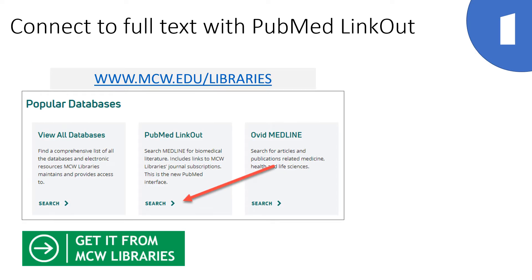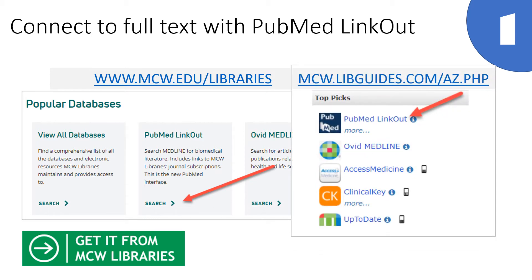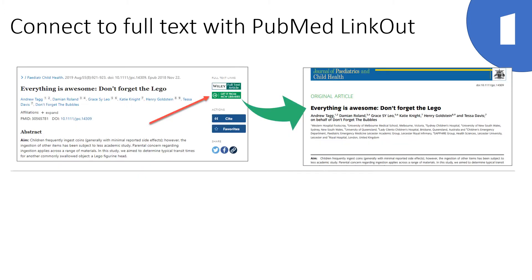Our first tip is to use the PubMed Linkout links found on the Libraries website or on our LibGuides. PubMed Linkout connects you to our electronic journal subscriptions. If we subscribe to the journal article, clicking the green Get It button will send you to the full text of the article.